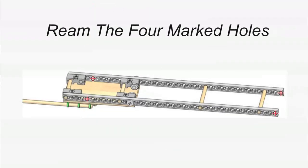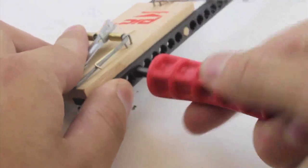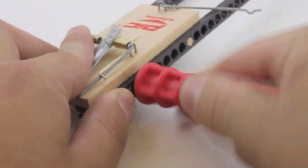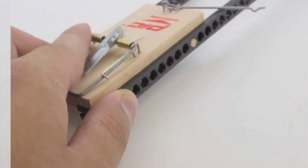Using the reamer, ream out the 4 holes marked in the picture above. Place the reamer on the hole and twist it back and forth until it goes all the way through, then give it some full twists to clear out the hole.